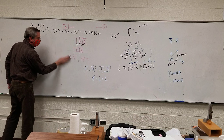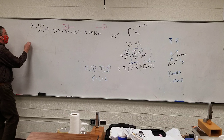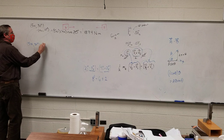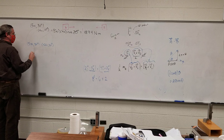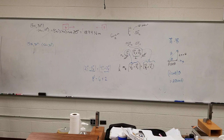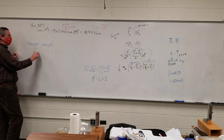Now back to our regularly scheduled programming. If I take that 5 newtons at 30 degrees, dot product with 5 newtons at 30 degrees — what would that equal? That's 25 newtons squared times cosine of 0, and cosine of 0 is 1, so it's just 25 newtons squared.